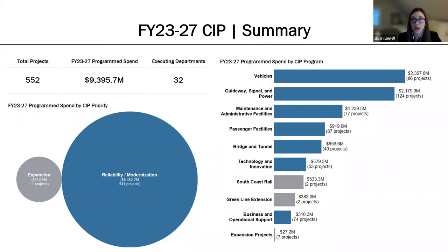On the right-hand side, you can see overall priorities as reflected by program size, which demonstrate an ongoing commitment to investing in the MBTA's vehicles, guideway signal and power assets, followed by the agency's maintenance and administrative facilities.